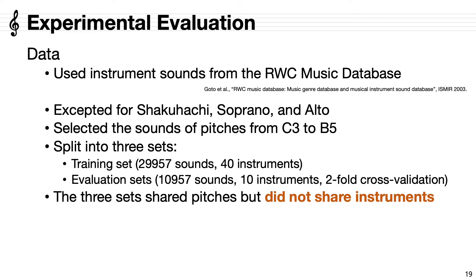Now I go on to the experimental evaluation. We used instrument sounds from the RWC music database, except for Shakuhachi, Soprano, and Alto. We selected the sounds of pitches from C3 to B5. We split the data into three sets: the training set with 40 instruments and the validation set with 10 instruments. For the evaluation sets, we applied two-fold cross-validation. Note that the three sets shared pitches but did not share instruments.